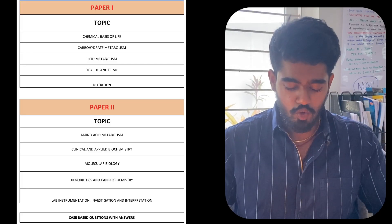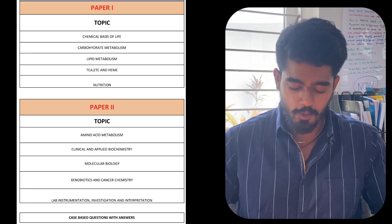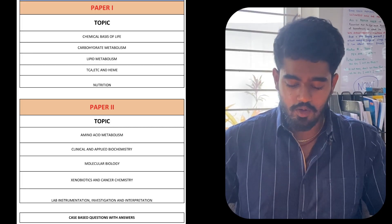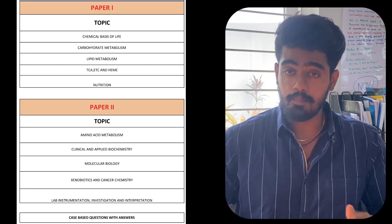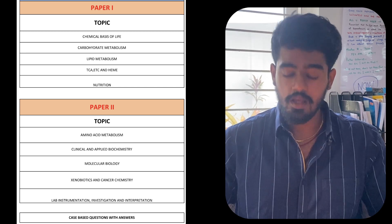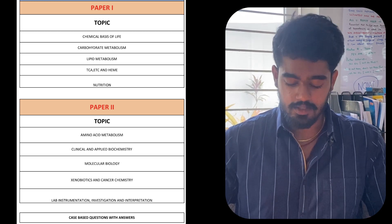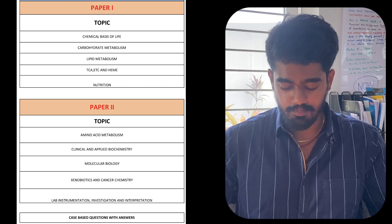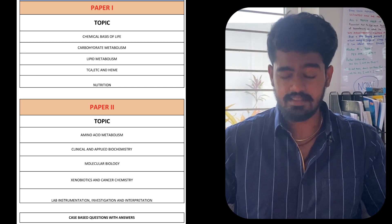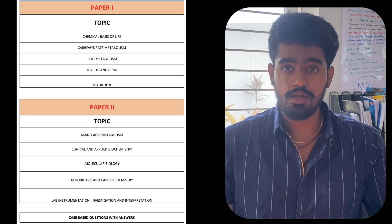Biochemistry is divided into paper 1 and paper 2. In paper 1, you have to study topics from: chemical basis of life, carbohydrate metabolism, lipid metabolism, TCA cycle, ETC, heme, and nutrition.